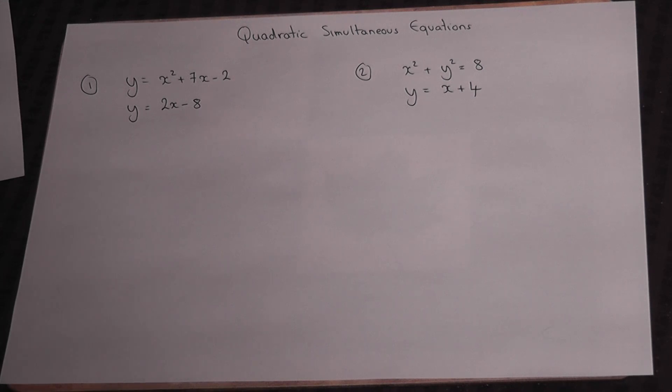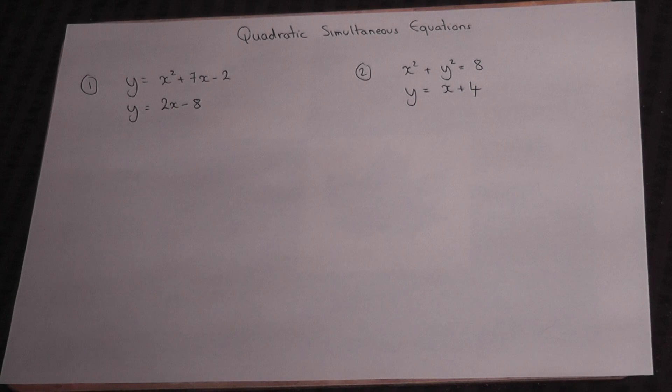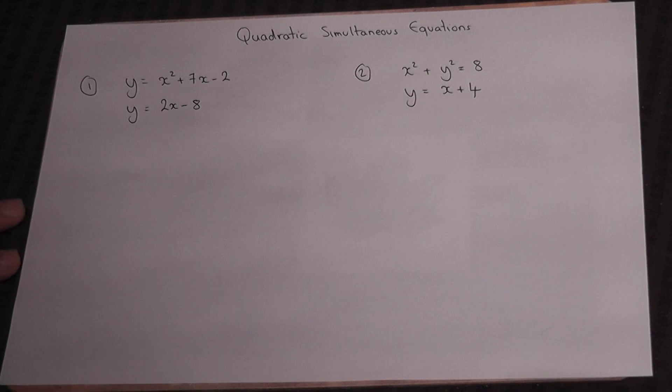This video looks at two examples of quadratic simultaneous equations and shows how you can find values of X and Y algebraically which satisfy both equations. In example one, we are given two equations and the question is where are these two equations equal to each other?